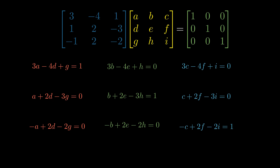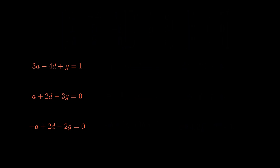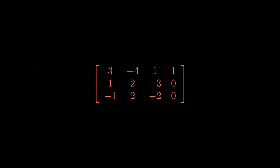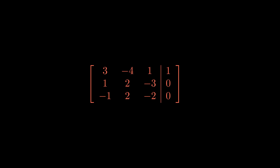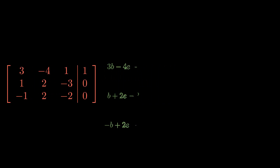Focusing on the equations in red first, we can express them as an augmented matrix by removing the variables and keeping just the coefficients. The top row corresponds to 3A minus 4D plus G equals 1, and the second row to 1A plus 2D minus 3G equals 0, and so on. We can do this same thing with the other two systems of equations.